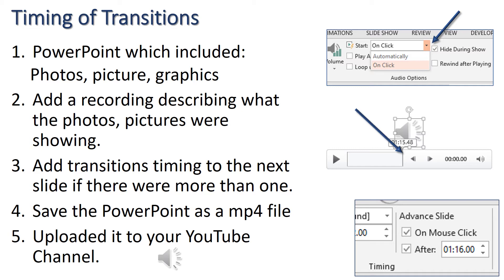I didn't want the recording icon to appear in my video, so I clicked on the recording icon and clicked on the Audio Tools playback tab that now appeared on the ribbon. In the audio options section of that tab, which is shown in the top right of the slide, I clicked the box beside 'hide during show.' That's where the arrow is pointing.